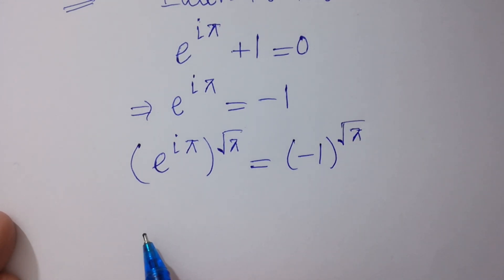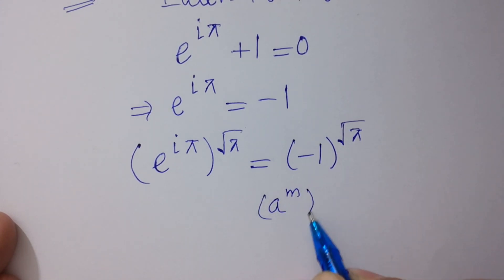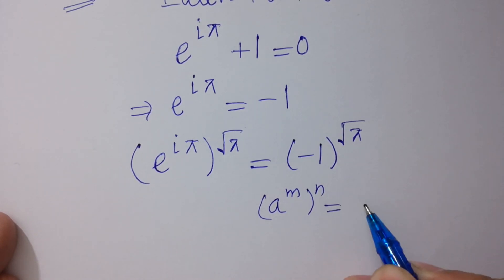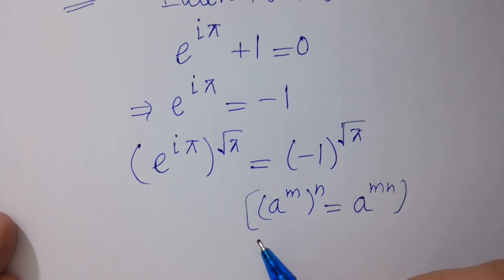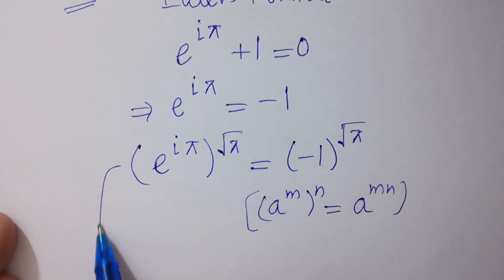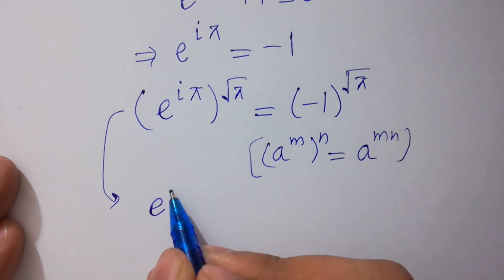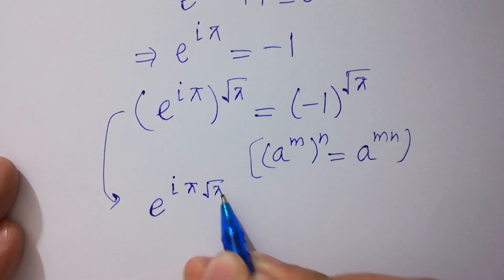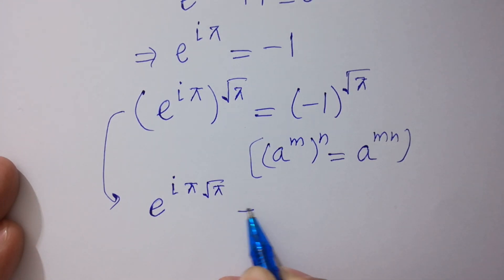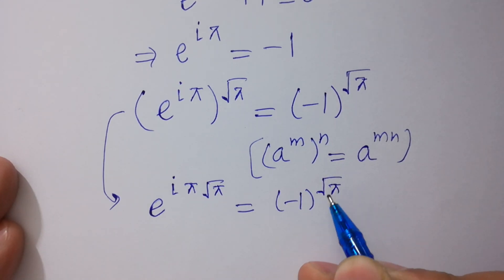Since a to the power m, to the whole power n, equals a to the power m*n, it will be equal to e to the power i*pi*sqrt(pi), equals minus 1 to the whole power square root of pi.